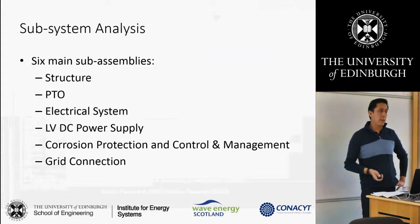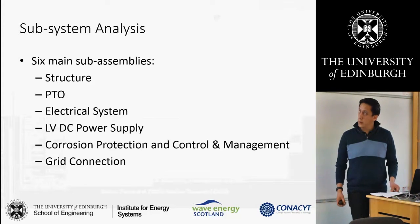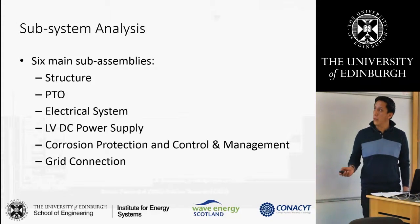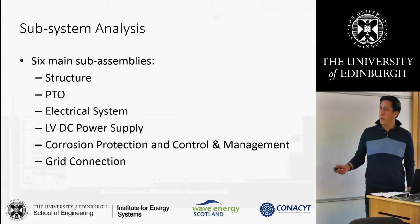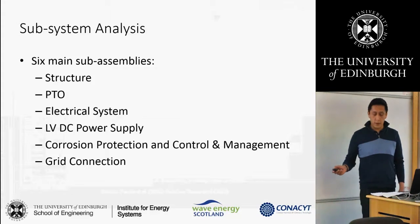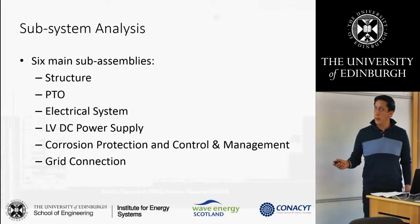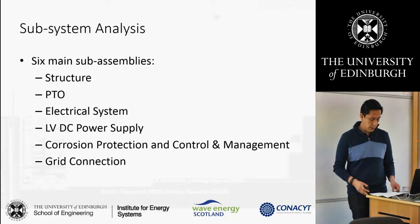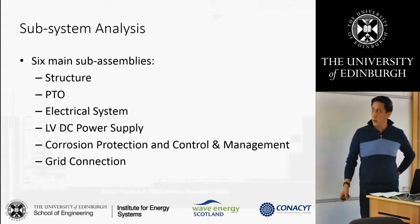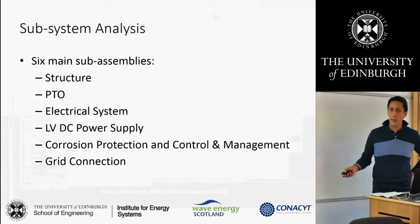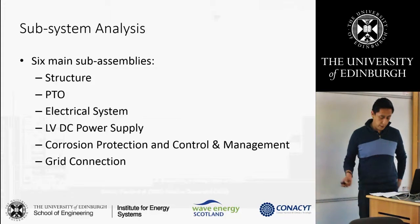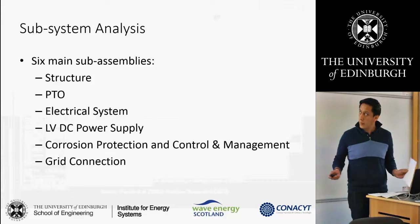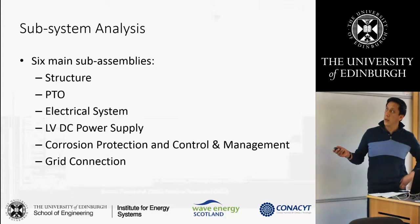Once we have the classification of the generic wave energy converters, we divide them into six main sub-assemblies: structure, power takeoff, the electrical system, voltage power supply, corrosion management, and grid connection. We can assume the last four sub-assemblies are very similar between the point absorber and the oscillating water column, so the same technology and failure rate values are assumed. The main differences will be in the structure and the power takeoff, depending on the device.